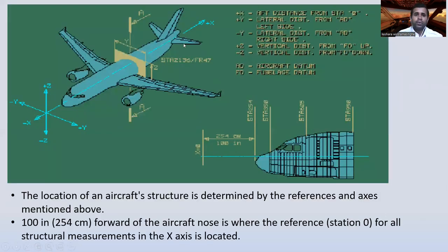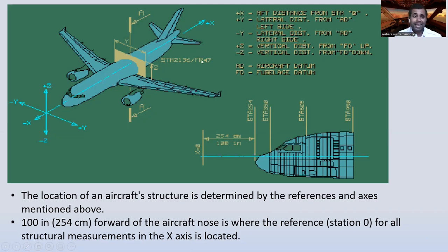Here you can see the aircraft structure with its axes: Z-axis, Y-axis, and X-axis. The plus X represents distance from station number zero. The plus Y is the lateral distance from the AD left side, and minus Y is the lateral distance from the right side. Plus Z is the vertical distance from the FD upward, and minus Z is the vertical distance from the FD downward. AD means Aircraft Data and FD means Fuselage Data.